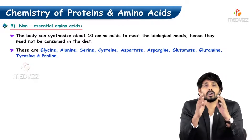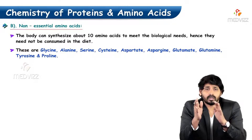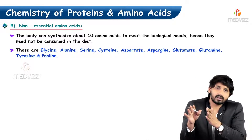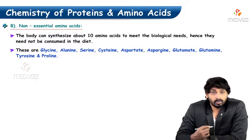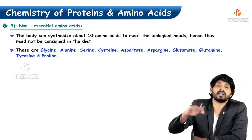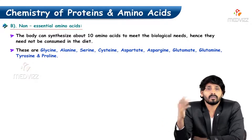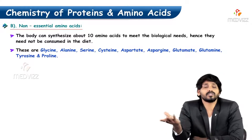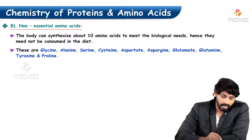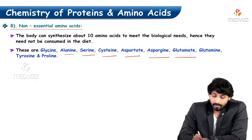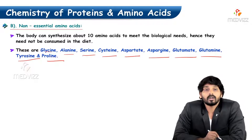Coming to non-essential amino acids: out of 20 amino acids, 10 have been classified as essential and semi-essential, so the remaining 10 are non-essential. This means that even if you are not supplying these amino acids in the diet, the body can synthesize them using the 10 essential amino acids and other chemical reactions to meet biological needs. The non-essential amino acids are glycine, alanine, serine, cysteine, aspartate, asparagine, glutamate, glutamine, tyrosine, and proline.